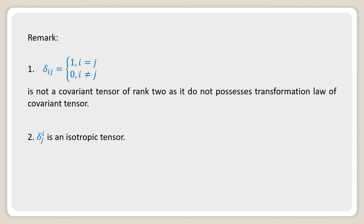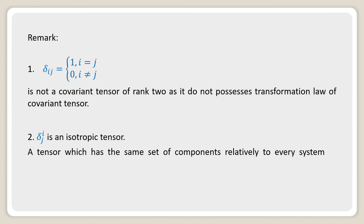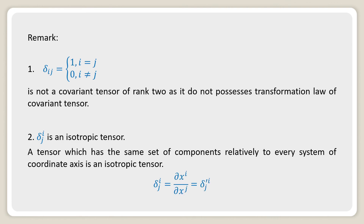Remark 2: delta i^j is an isotropic tensor. A tensor which has the same set of components relative to every system of coordinate axes is called an isotropic tensor. Therefore delta i^j, which equals del x^i by del x^j, can also be written as delta'^i_j.